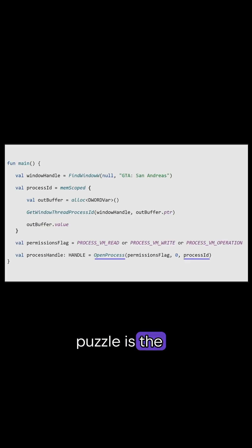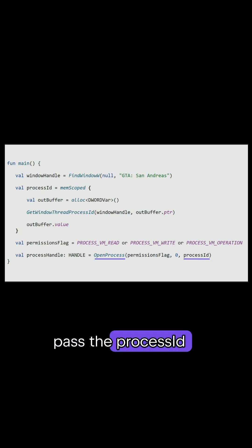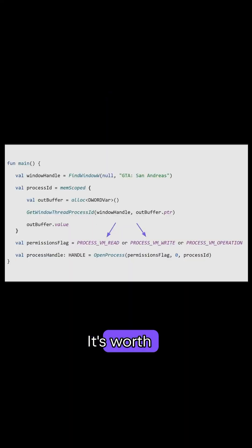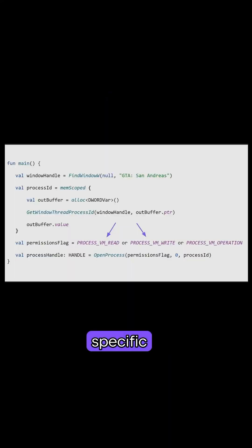And the last bit to the puzzle is the openProcess function. We need to pass the processID that we got earlier, and we will basically get the process handle that we need to pass into the WriteProcessMemory function. It's worth noting that we need to open the process with specific permissions for reading and writing memory.